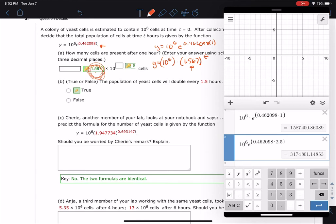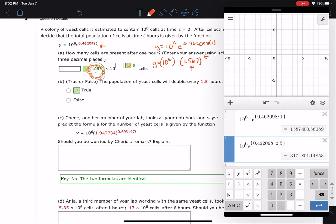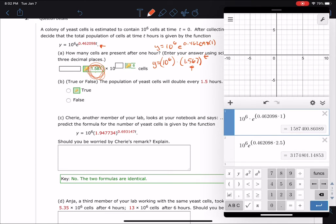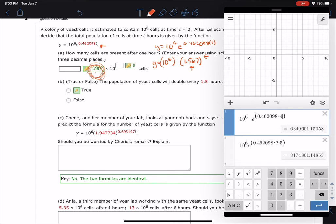So my mistake was I was putting in 1.5 in Desmos there. I don't want to check the yeast population at 1.5 hours. I want to check it 1.5 hours after one hour, which means I need to check it at hour 2.5. Or if I checked it at hour, 1.5 hours after 2.5 would be checking it after, at hour four, and it should be double the 3,174,000. And it is double.